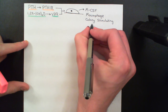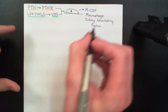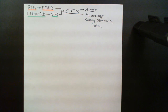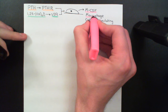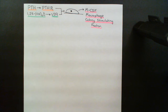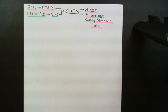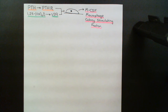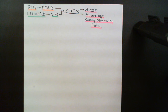Macrophage colony-stimulating factor acts on cells of the hematopoietic system. Osteoclasts come from pre-osteoclasts, because an osteoclast is a massive multi-nucleated cell made by the fusion of many cells. Pre-osteoclasts come from the hematopoietic lineage — from the same stem cell that creates all cells of the blood: the hematopoietic stem cell. This creates erythrocytes, all leukocytes including macrophages, and megakaryocytes which make platelets.